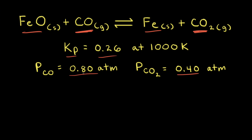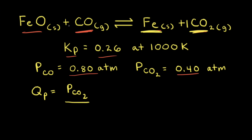We can use the reaction quotient Q to predict which direction the reaction will go to reach equilibrium. So let's calculate Qp. Qp is equal to — first we think about our products, and we leave solids out of equilibrium expressions, so we also leave solids out of our expression for Qp. We're going to leave out iron and include carbon dioxide since it's a gas. So we write the partial pressure of carbon dioxide raised to the first power, since the coefficient in front of carbon dioxide is one, divided by...